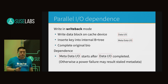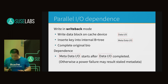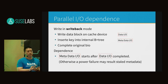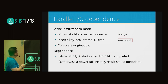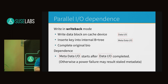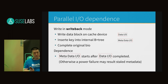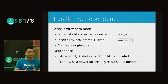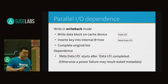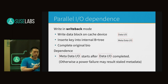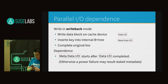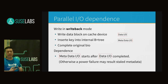Inside bcache, when handling parallel I/Os, there are majorly two kinds of I/Os: one is for metadata, one is for data. Here is the example for the write-back mode. For write-back mode, data can still go into the backend device directly if it is continuous and bigger than four megabytes. For random I/O, bcache will first try to store them on SSD, and then insert a key in the internal B-tree to indicate that this LBA address is cached.